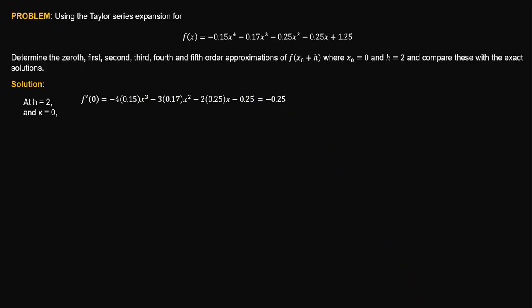Next, let's compute the second derivative by differentiating the first derivative expression. So f''(x) = negative 1.8x² minus 1.02x minus 0.5, and at x = 0, the second derivative value is negative 0.5. The third derivative at x = 0 is negative 3.6x minus 1.02, giving a value of negative 1.02.